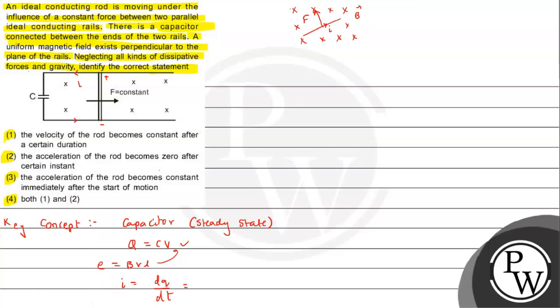When this force is applied and the capacitor, when this rod moves forward, in that situation we can say current will start flowing in this section. This rod will have a current because potential difference has developed, so a current will be flowing in this direction.